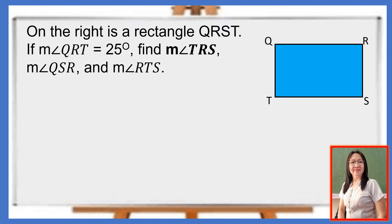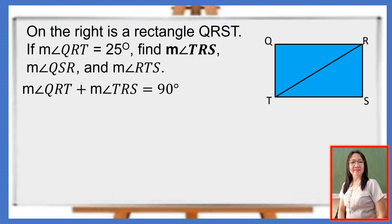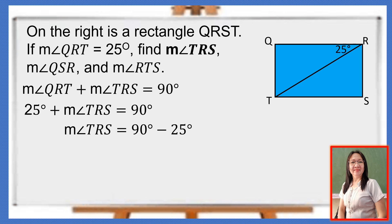Let us start finding the measure of angle TRS. Since QRST is a rectangle, each angle Q, R, S, and T measures 90 degrees. Diagonal RT divides angle R and angle T. So, the measure of angle QRT plus the measure of angle TRS is 90 degrees. Substituting 25 degrees for angle QRT, the measure of angle TRS is 90 degrees minus 25 degrees, which is 65 degrees.